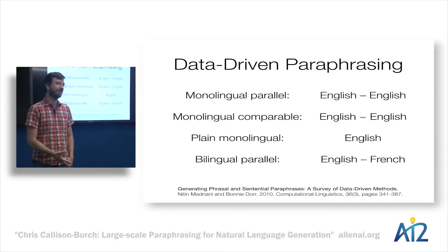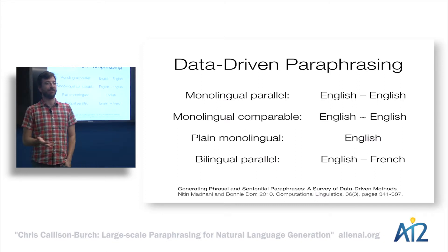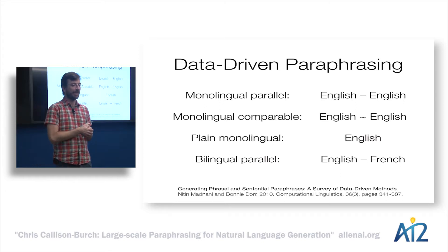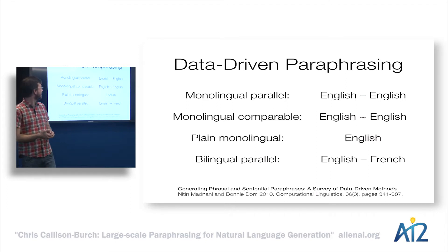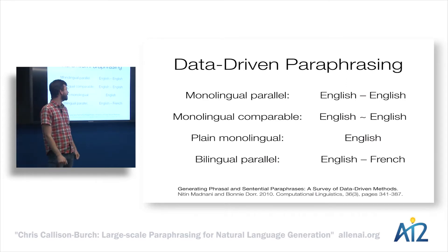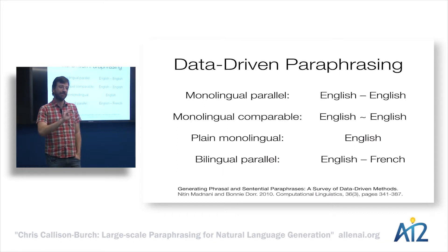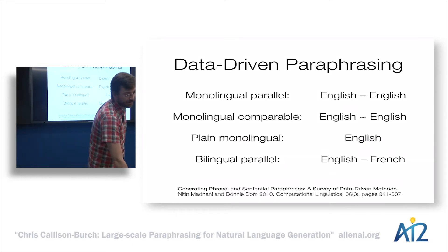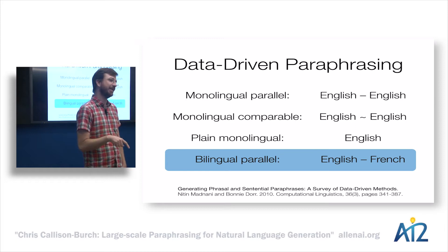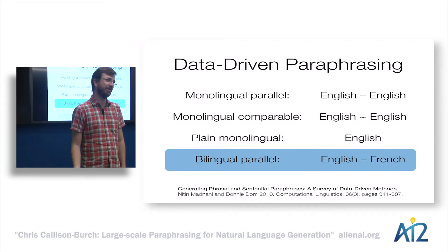Like most of the rest of the field over the past few decades, we've been shifting towards data-driven methods. There's a really nice review article in Computational Linguistics on data-driven paraphrasing methods by Nitin Madnani and Bonnie Dorr that breaks them down based on a number of different categories. I'll walk through examples from each of these different types of data. I'm particularly interested in bilingual parallel corpora because I'm coming from a tradition in machine translation.